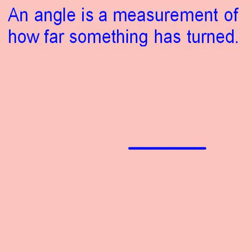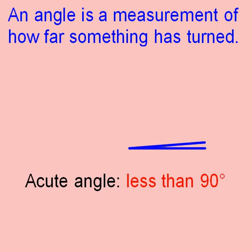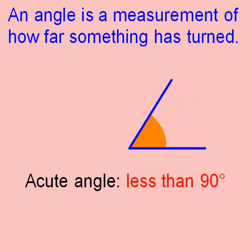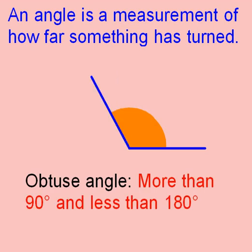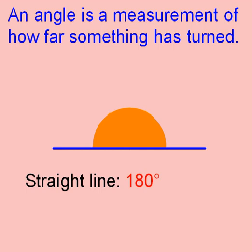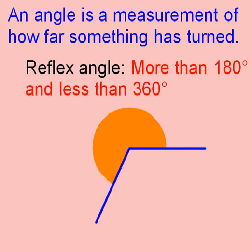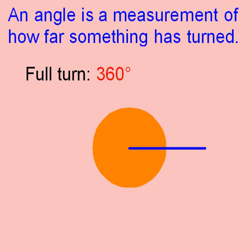An angle is a measurement of how far something has turned. Angles that are less than 90 degrees are called acute angles. An angle of exactly 90 degrees is called a right angle. Angles that are more than 90 degrees but less than 180 degrees are called obtuse angles. A straight line is exactly 180 degrees. Angles that are more than 180 degrees and less than 360 degrees are called reflex angles. A full turn is 360 degrees.